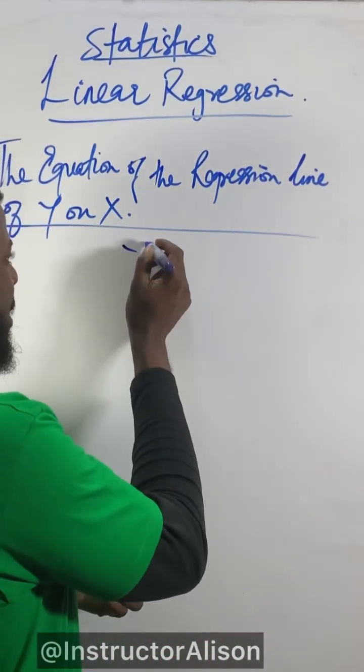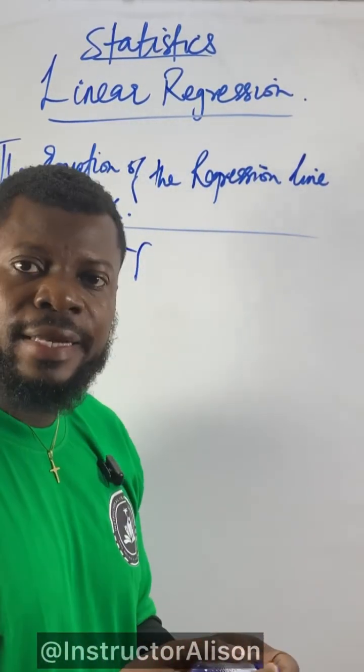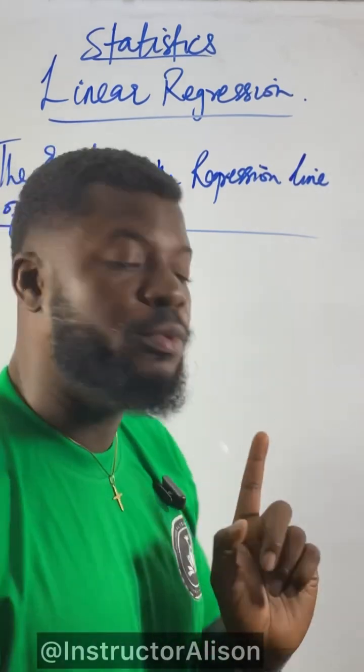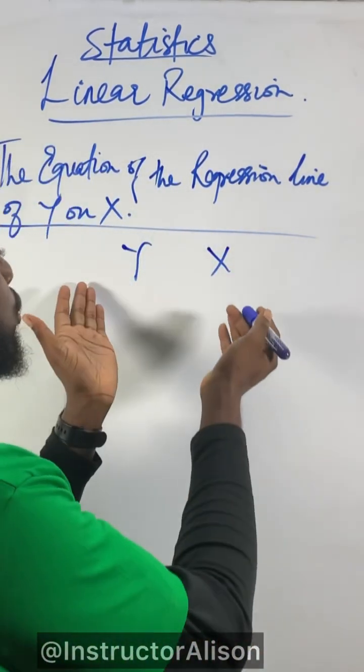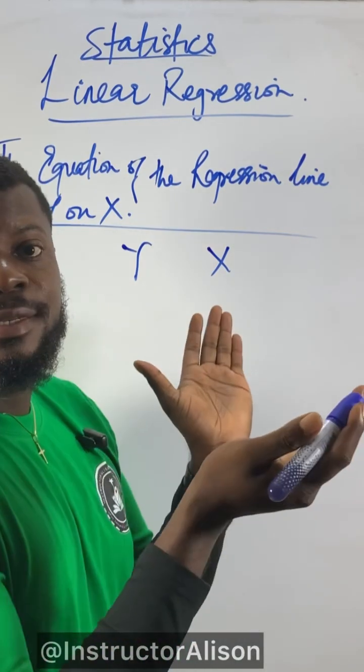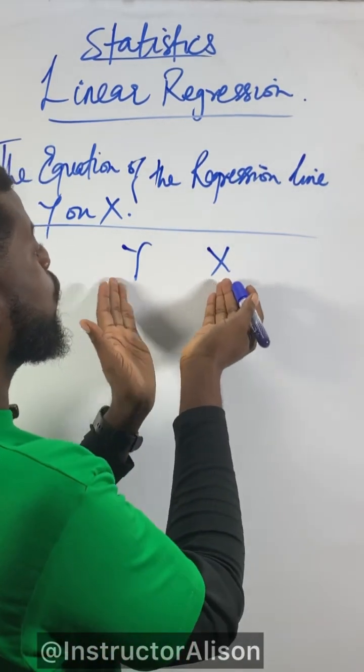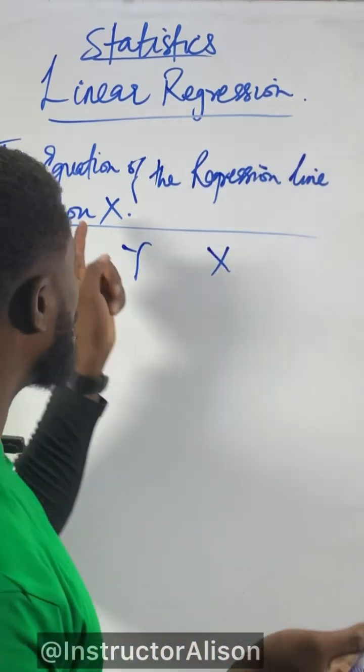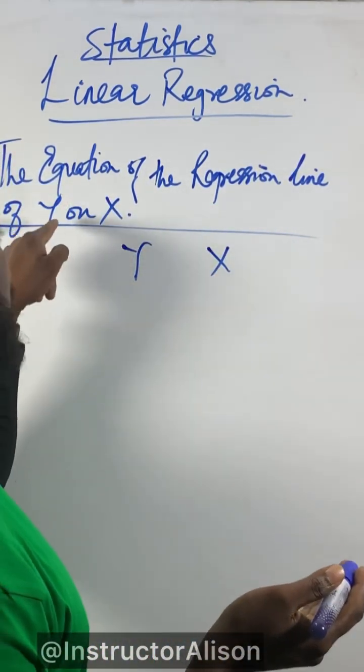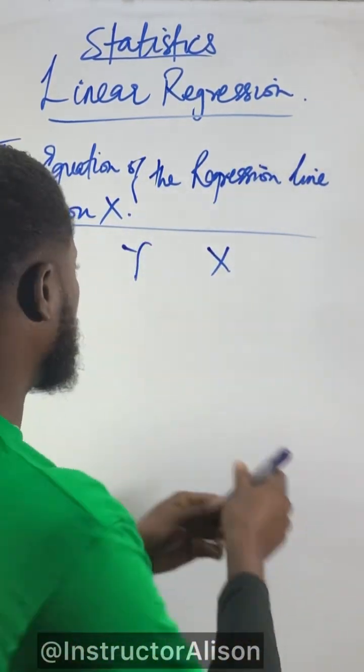We usually use y to represent the dependent variable and x to represent the independent variable. We measure the relationship between these two. Anytime we see two variables, we call it simple regression. The equation of the regression line of y on x is very simple, it looks like this.